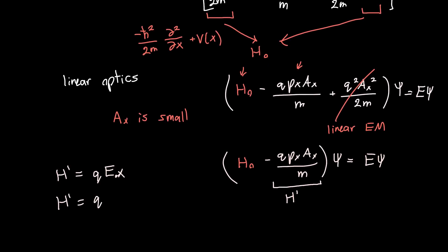So if we write this out in terms of its derivative, this is just iqℏAₓ/m times the derivative with respect to x. So this is essentially two equivalent ways of representing the same thing.